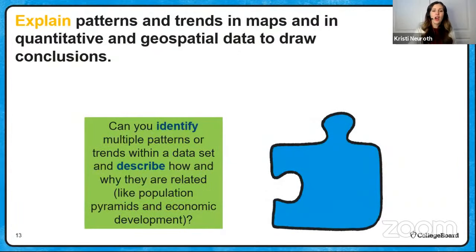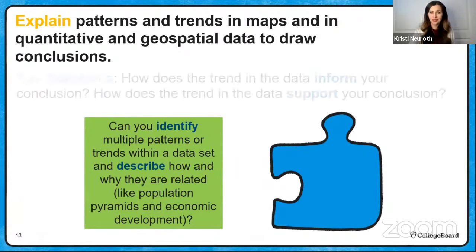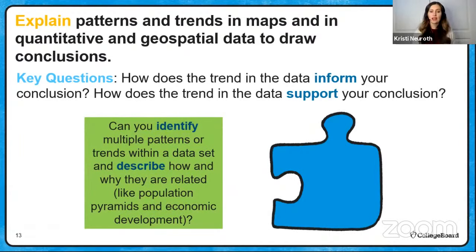Skill three: explaining patterns and trends in maps and quantitative and geospatial data to draw conclusions. Remember, quantitative means data that has a number associated with it. Here the question becomes: how does the trend in the data inform or support your conclusion? Can you identify multiple patterns within a data set and describe how and why they are related — for instance, like population pyramids and economic development?